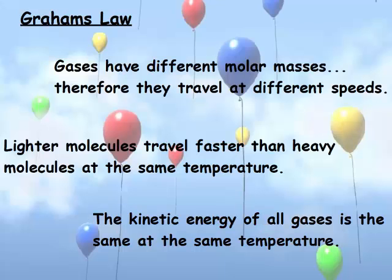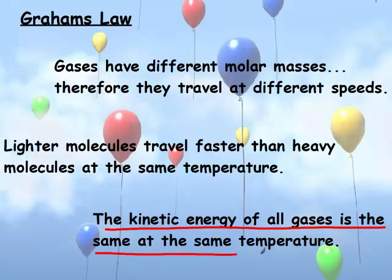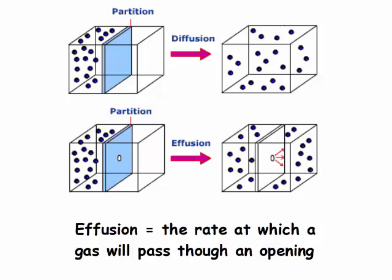Graham's Law says that gases have different molar masses, and therefore they travel at different speeds. Lighter molecules travel faster than heavy molecules at the same temperature. To figure out which one's lighter or heavier, you're going to find the molar masses. Remember, the kinetic energy of all gases is the same at the same temperature — to change kinetic energy, you have to change the temperature. Diffusion is the rate at which particles cross a room — if you spray perfume on one side of the room, the time it takes to get across is diffusion.